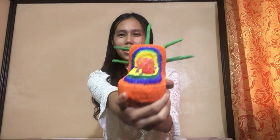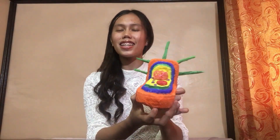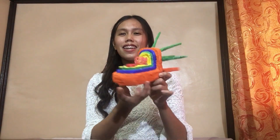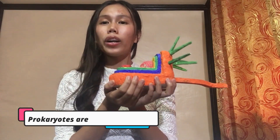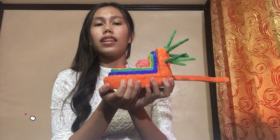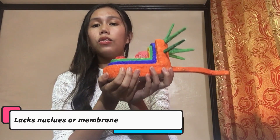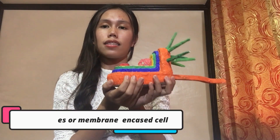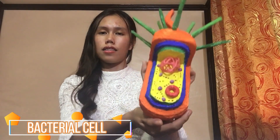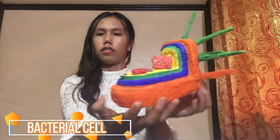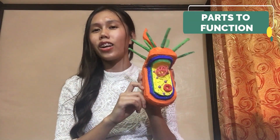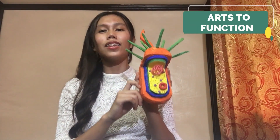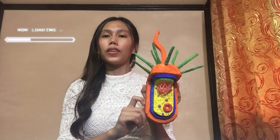let's tackle this — what is this? It's form and it's function. For a small recap: we all know that prokaryotes are made up of cells and they lack a cell nucleus or any membrane-bound organelles. One example of a prokaryotic cell is this bacterial cell. So we're gonna tackle its parts down to its functions, and I hope you guys will listen well.